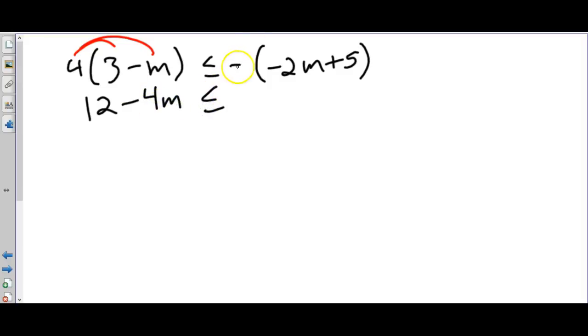And finally we could combine both - we can have parentheses and variables on both sides. So parentheses we still need to distribute. 4 times 3 is 12, 4 times negative m is negative 4m. With the negative sign here there's actually a 1 between it and the parentheses. Negative 1 is really there so we're distributing a negative 1. Negative 1 times negative 2m is positive 2m and negative 1 times 5 is negative 5.